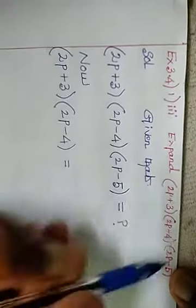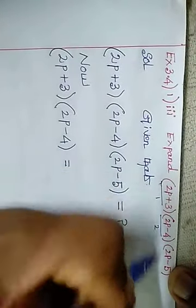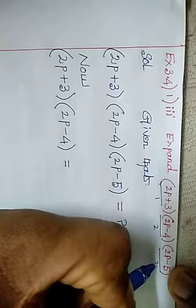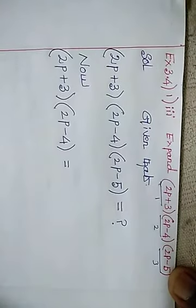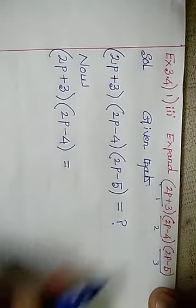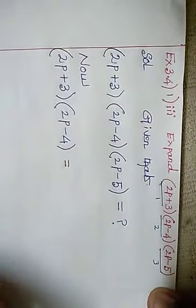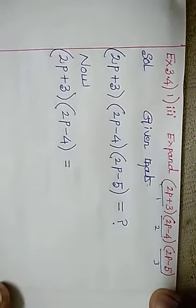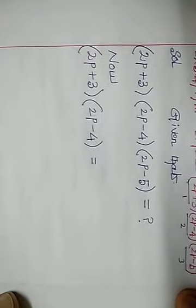There are 3 products. This is the 1st product, this is the 2nd product, and this is the 3rd product. In the 3 products, multiply and find the answer. Ok, multiply 3 and find the answer.